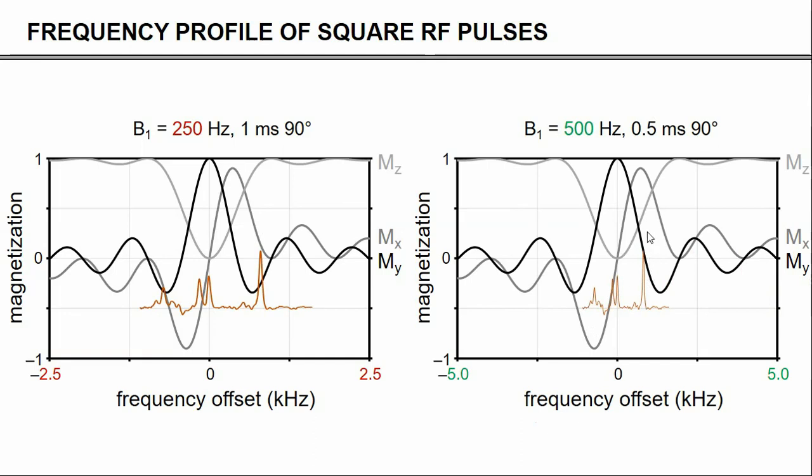And now, even though the NAA is still not perfectly excited, the situation is already better. In other words, with a square excitation pulse, you always want to execute it as short as possible, given the maximum allowable amplitude that is available to you.